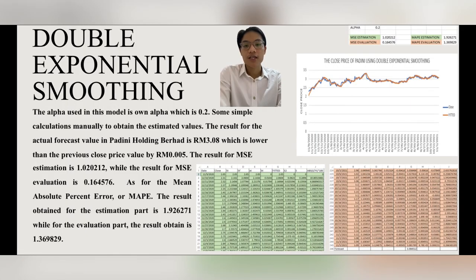Next, double exponential smoothing. As you can see, there is a graph and tables which are obtained from this model. The alpha used in this model is optimal alpha which is 0.2. The result for the actual forecast value in Padini Company is RM 3.08 which is lower than the previous close price value by RM 0.005. The result for MSE estimation is 1.020212 while the result for the MSE evaluation is 0.164576. As for the MAPE, the result obtained for the estimation part is 1.926271 while for the evaluation part, the result obtained is 1.369829.